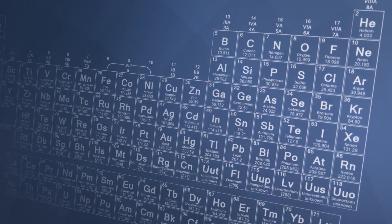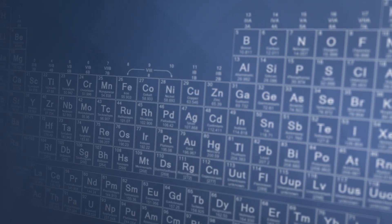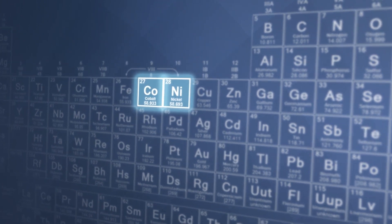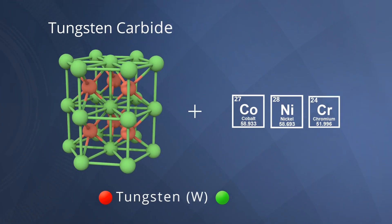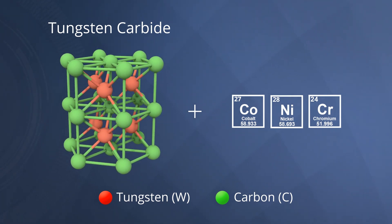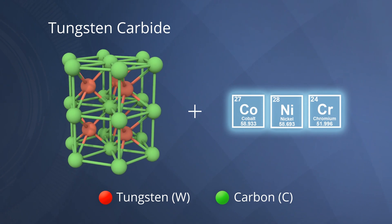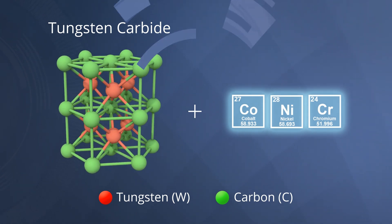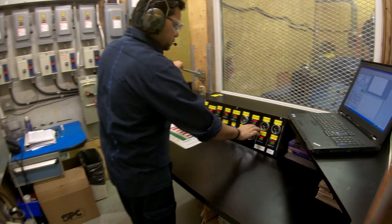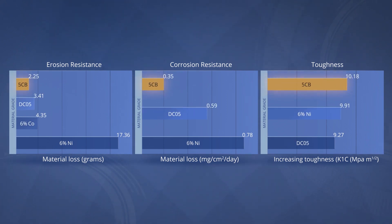Now let's discuss the role of trim material in resisting erosion. For a long time, choke manufacturers selected their trim material from a nickel or cobalt binder tungsten carbide. To address both corrosion and erosion, carbide vendors began using a composite binder, a mix of cobalt, nickel, and chromium in a tungsten matrix. This material is traditionally referred to as tungsten carbide. In tests conducted using the MasterFlow erosion loop and several third-party labs, the trims made out of 5CB, a premium-grade tungsten carbide, demonstrated the highest erosion and corrosion resistance as well as toughness.